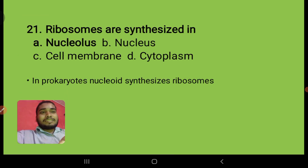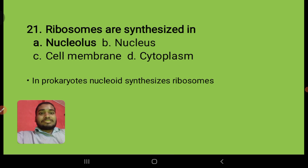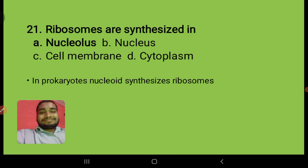The first question is: ribosomes are synthesized in — obviously nucleolus or cell membrane. Ribosomes are synthesized in those organisms also which don't have a nucleus, like prokaryotes. So the nucleoid synthesizes the ribosomes.